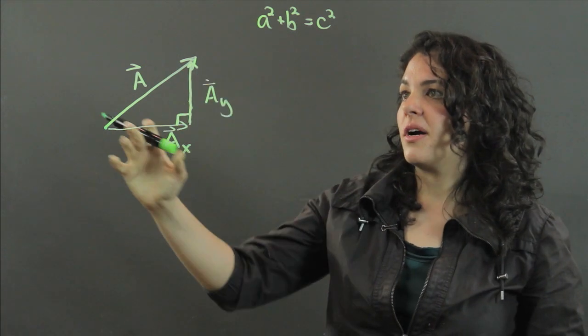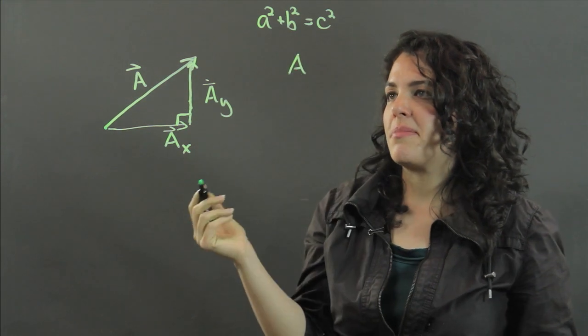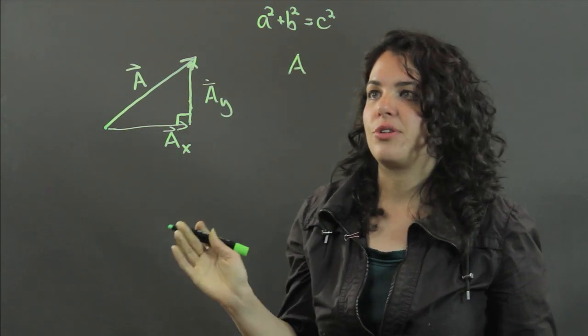So A here is our hypotenuse. And we can say, we're just dealing with the magnitude, so I'm going to drop the vector symbol.